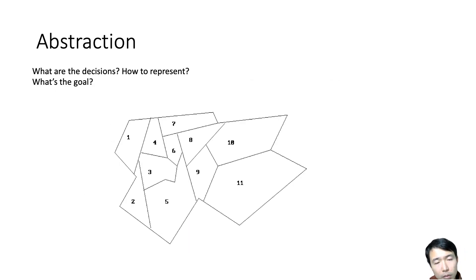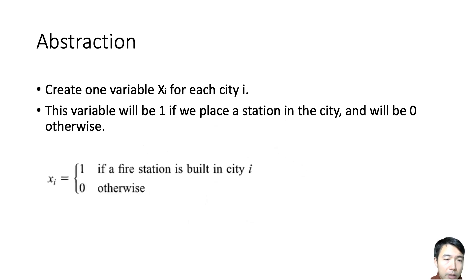How do we write down the decision, the goals, and the restrictions into formulas? This is the concept of abstraction. In all operational research problems or math modeling, we need to create, first of all, variables. We create a variable Xi for each city. The variable Xi will be one if we place a station in the city and zero otherwise. If I place a fire station at neighborhood one, X1 is going to be one, otherwise zero.